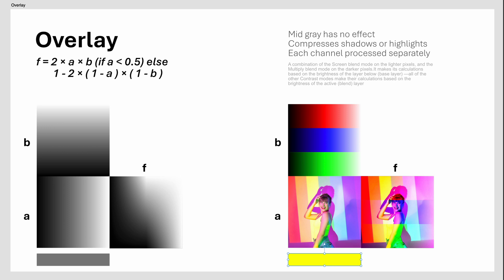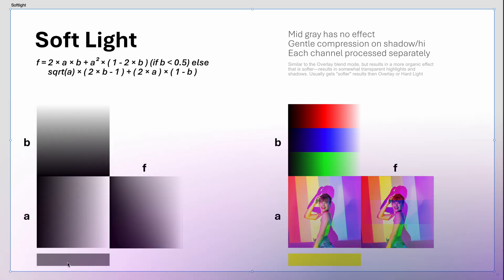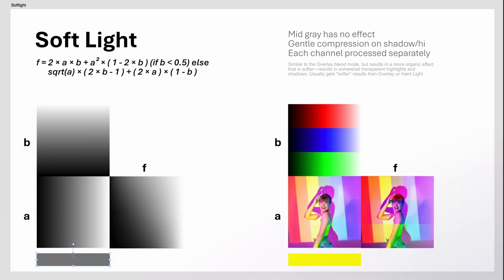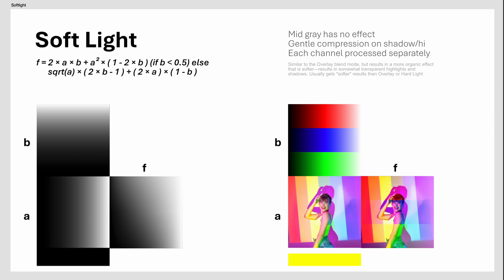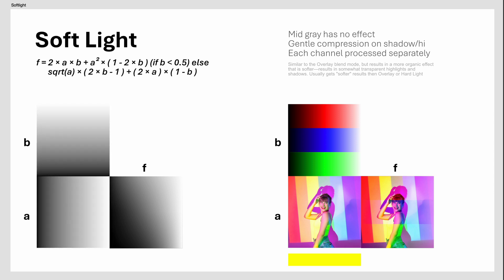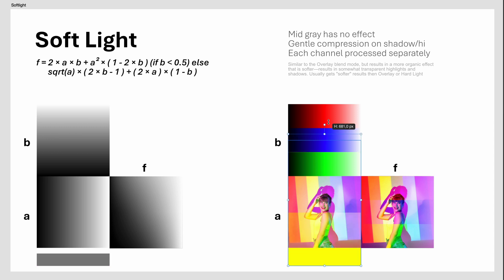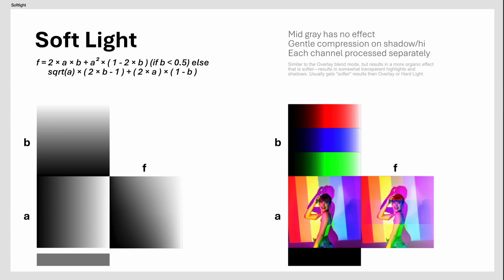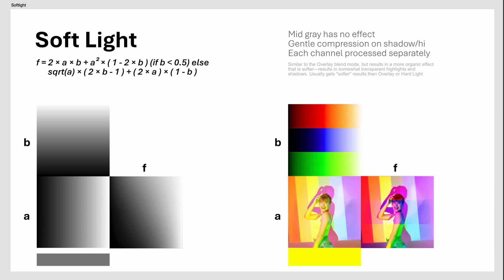Great for enhancing contrast and saturation in an image. The Soft Light Blend Mode is a combination of Overlay and Hard Light and usually feels like a softer version of the Overlay blend mode. It results in a softer and more diffused effect compared to Overlay or Hard Light. Probably the most used contrast blend mode.